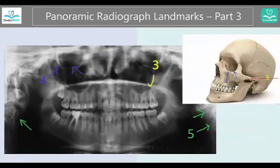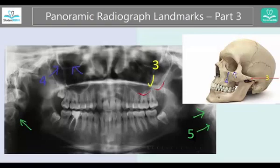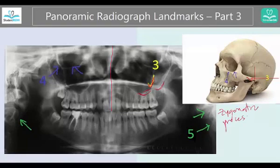Now let's jump to number three. Number three is this area that looks like a hook, that looks like a U. There's this area that you have to particularly look at — a little more towards the midline — that is radiopaque, meaning a little wider, and that is above the maxillary molars. This is what is called the zygomatic process. A process is something that is sticking out. Can you see this U shape here? It is reflected here. The panoramic image is a 2D of a 3D.